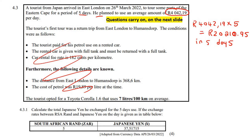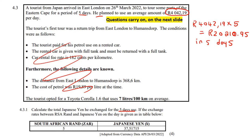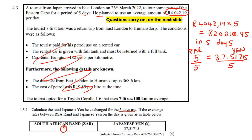Now we need to convert this to Japanese yen, so we're going to use this currency conversion table. We know that 5 rand will give us 37.51715 Japanese yen. So what would one rand give us? To get this into a one, you would divide this side by five, and in mathematics, what you do to one side you do to the other side. So one rand will give us 7.50343 Japanese yen.